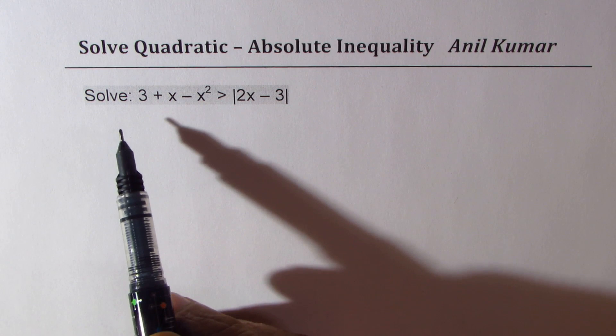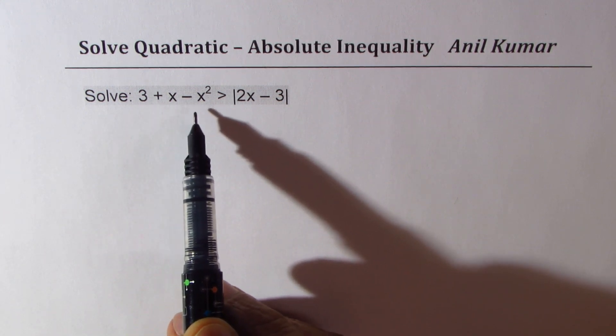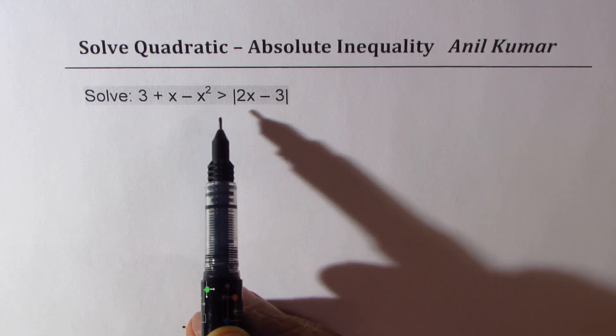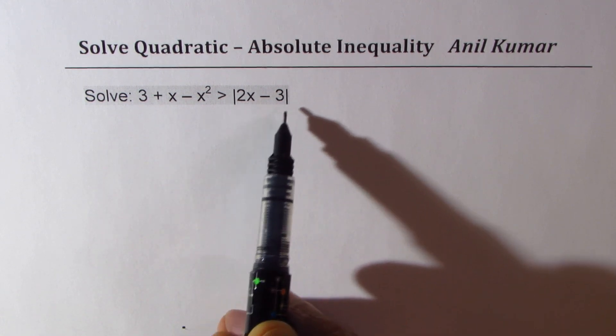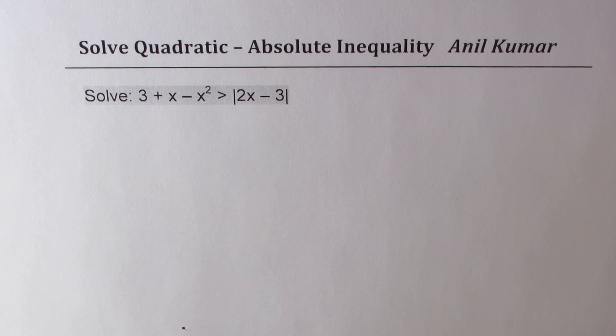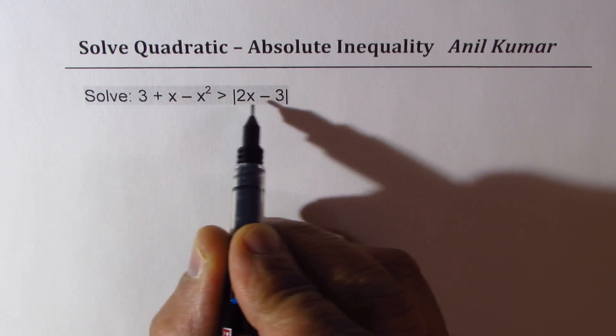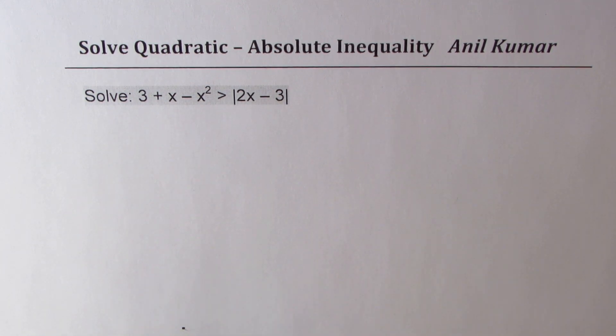We need to solve 3 plus x minus x squared greater than absolute value of 2x minus 3. Now whenever you get absolute function involved, you have to always break it down as a piecewise function.